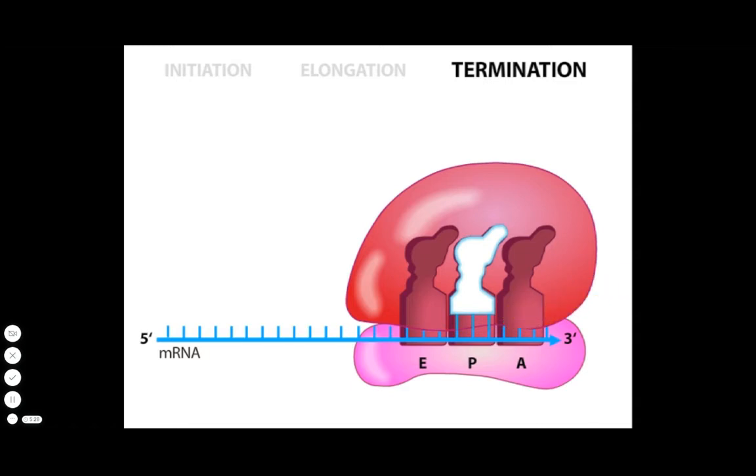Finally, another factor, called ribosome recycling factor, or RRF, along with EF-G, binds at the A site, and the accompanying GTP hydrolysis undocks the two ribosomal subunits.